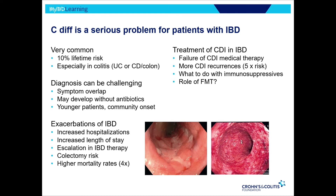C. diff is a really serious problem for patients with IBD — it's actually how I got into treating IBD, through my work in C. diff. You have about a 10% lifetime risk with IBD of developing it, more often in ulcerative colitis and Crohn's involving the colon. Diagnosis can be really challenging because the symptoms overlap — diarrhea, pain — and you might see it even without precipitating antibiotics, which is different than in non-IBD patients. It's a big problem during a flare: it increases hospital length of stay, colectomy risk, and carries higher mortality — four times the risk of mortality around flares. Treatment is more difficult and refractory, with five times the risk of recurrence.